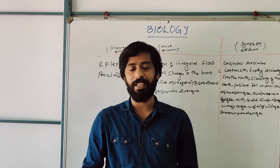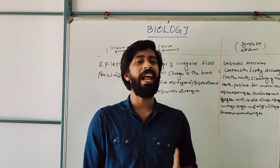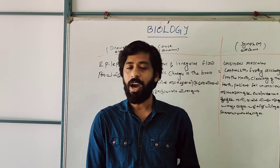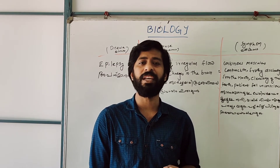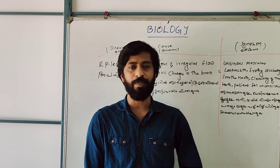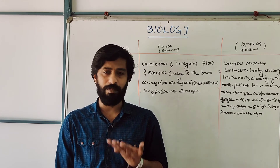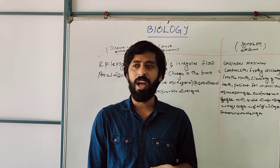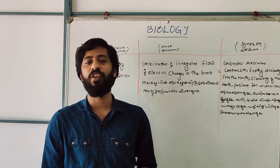To summarize: Alzheimer's disease involves degeneration with insoluble protein accumulation. Parkinson's disease involves destruction of specialised ganglions in the brain, and dopamine production is decreased. Epilepsy involves continuous and irregular flow of electric current in the body.